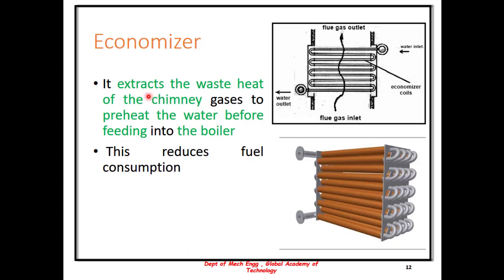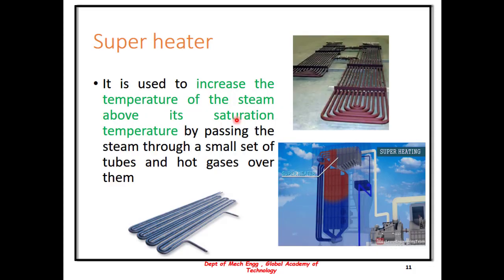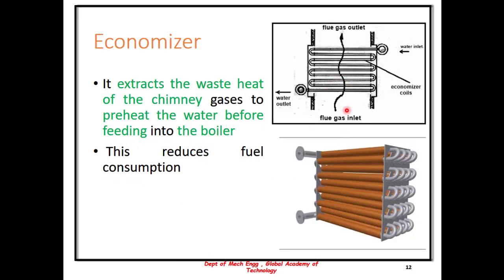The economizer is basically an element which extracts the waste heat of the chimney gases. This waste heat could be used to either preheat the water or is used in the superheater here. It also looks very much similar to the preheater, a set of tubes, but the economizer takes the heat from the flue gas.